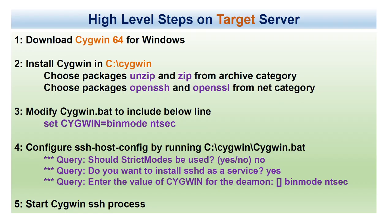These are the high-level steps we need to perform on the target server. We will download the utility called Cygwin 64-bit, then install it to the C drive. During installation, we will choose four specific packages: unzip and zip from the archive category, and OpenSSH and OpenSSL from the net category.